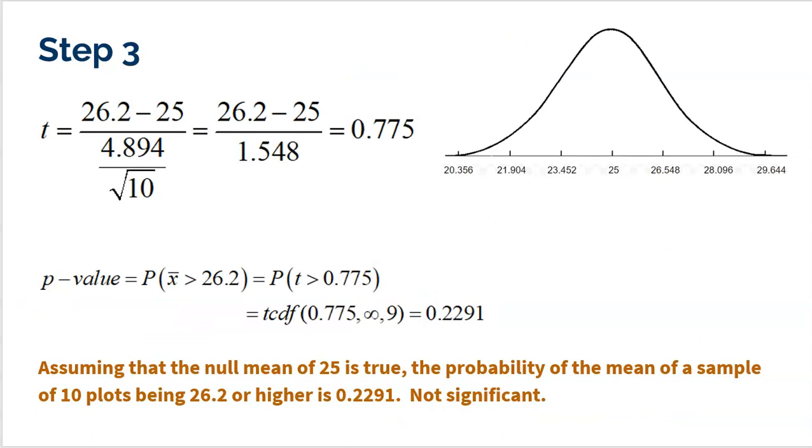So first, we've got to find our t-score. Take the 26.2, our sample mean. Subtract the null, which was 25. Divide by our standard error. And we get 0.775, and again, 0.775 is right about there, which is the same place that 26.2 is. 26.2 is just the actual sample mean, the mean amount of deer in my samples, where 0.775 is the t-score that tells me it's 0.775 standard errors above the mean.